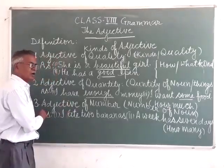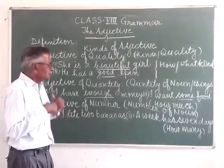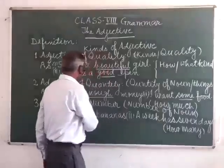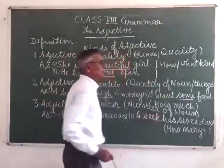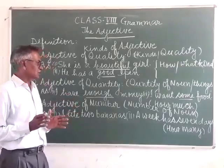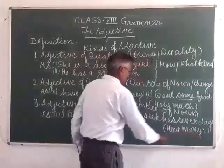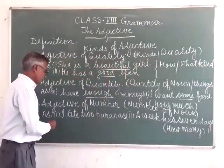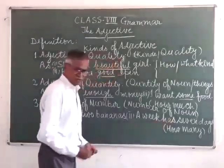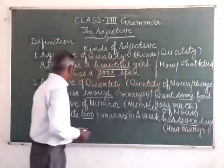Now we come to the third kind, that is the adjective of number. As its title itself denotes, it indicates a number. An adjective of number denotes the number of a noun. For example: 'I ate two bananas' and 'A week has seven days.' Here, two and seven are adjectives of number.